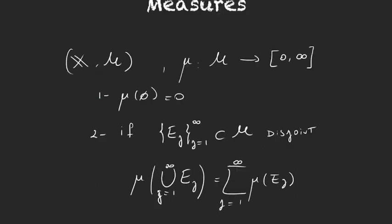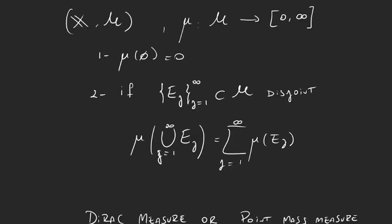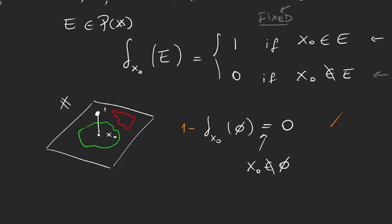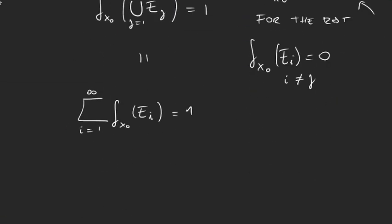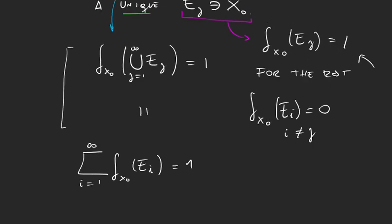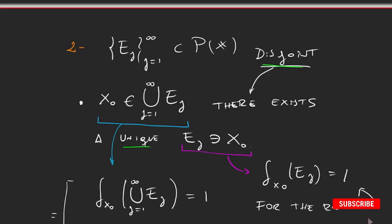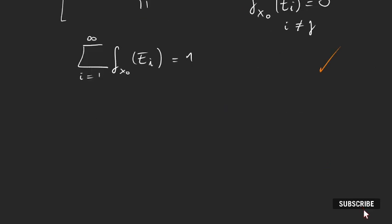So, again, let's check the second property. It says, you have a sequence of disjoint sets, then the measure of the union is the sum of the measures. And that's exactly what we just got here for the delta. These two things are equal. So, we are fine. Delta x₀ satisfies the second property as well. And then, we can finally say that delta x₀ is a measure.